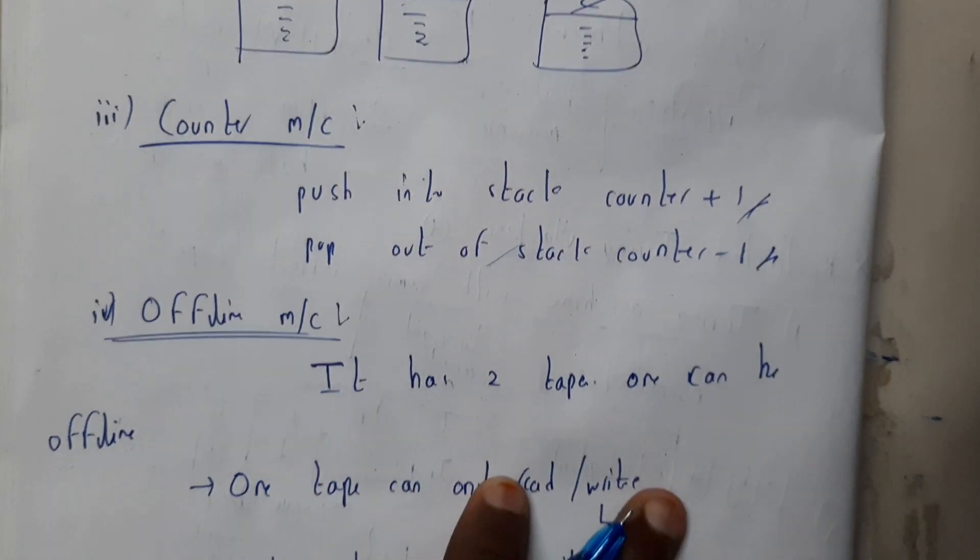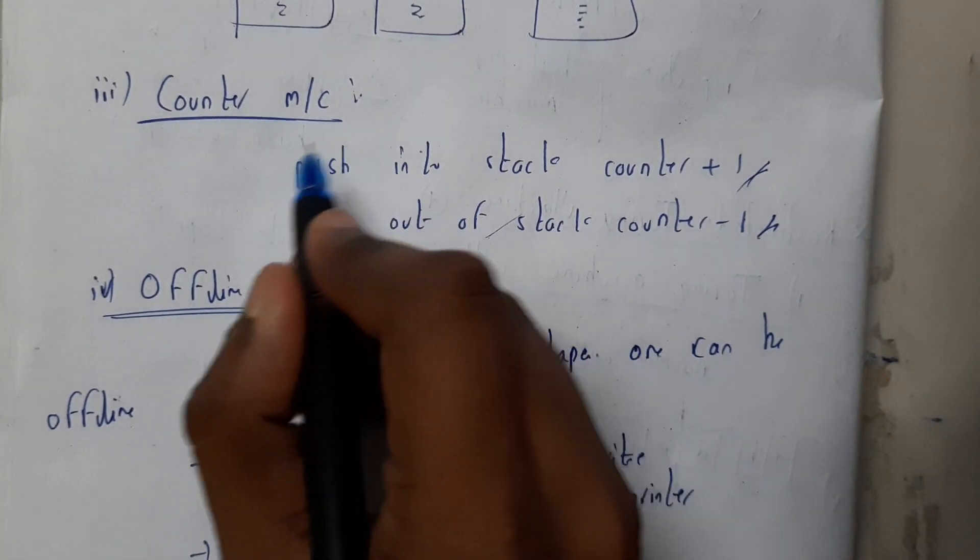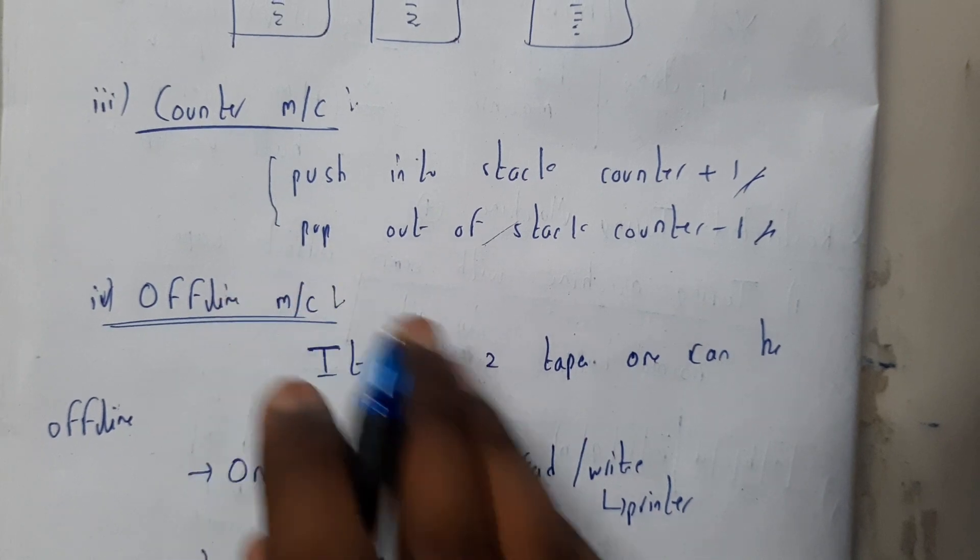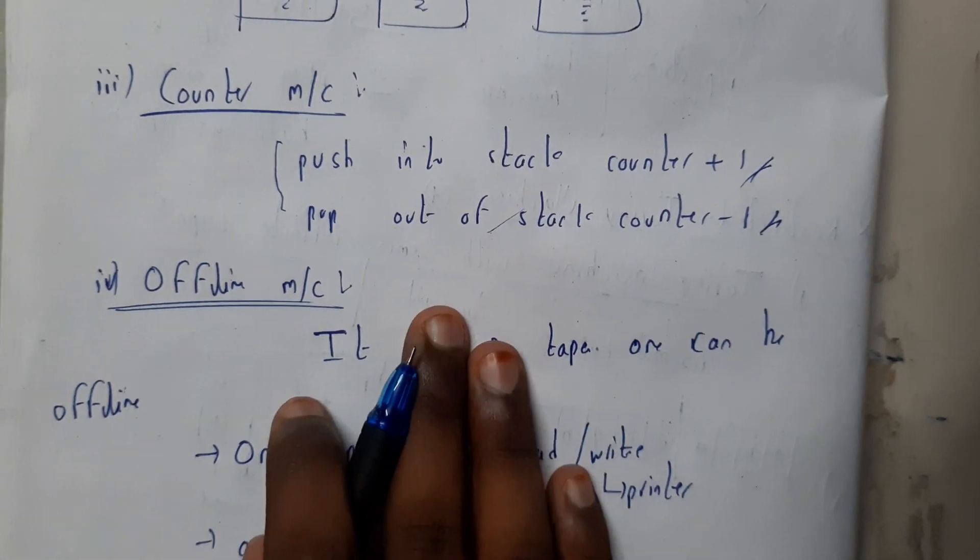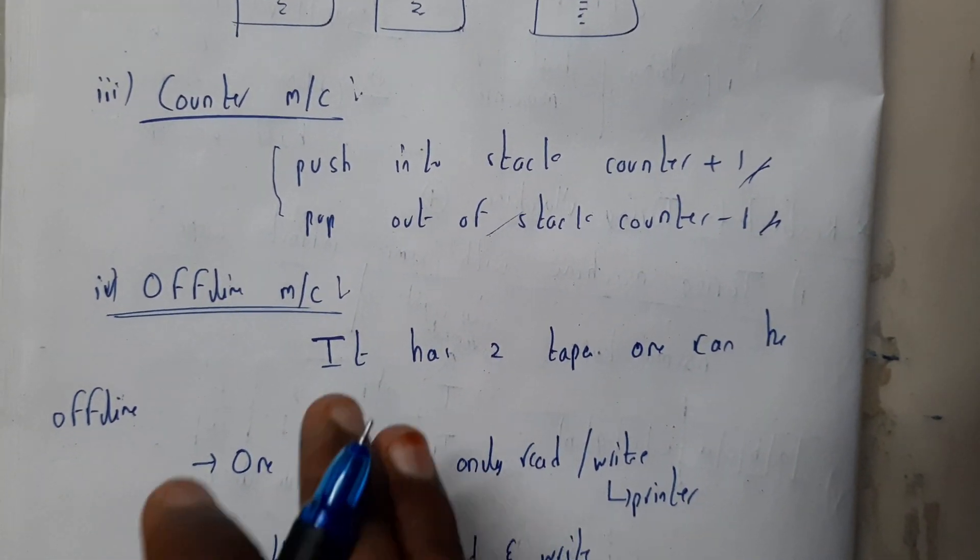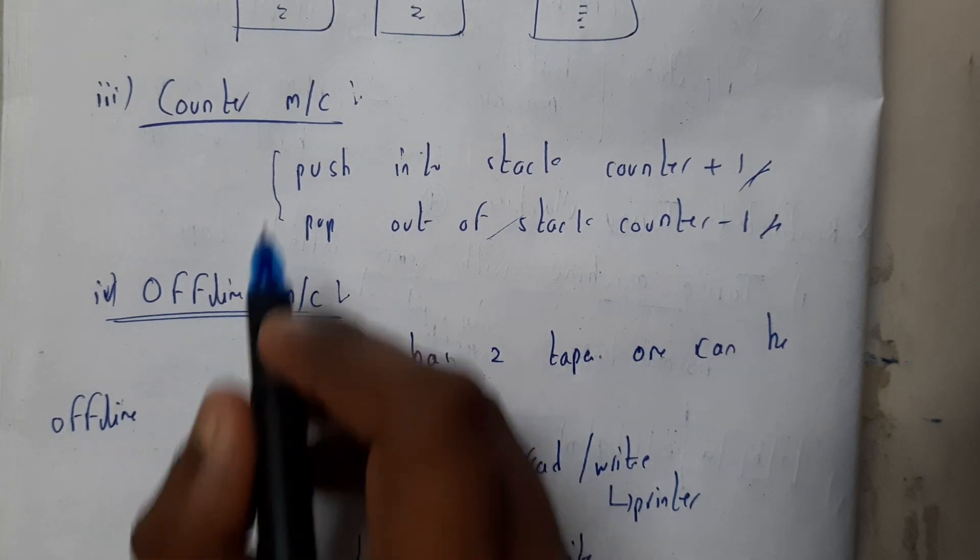While you are popping out, you will be decrementing the counter. I told you while discussing problems - there is no counter basically in Turing machine, but by applying this we can add a counter.